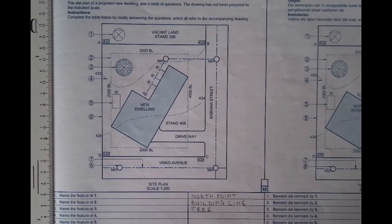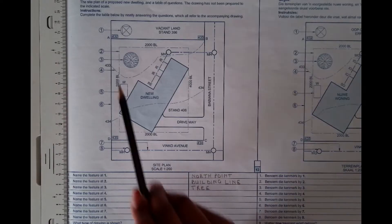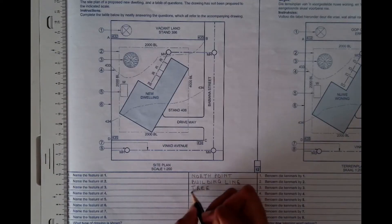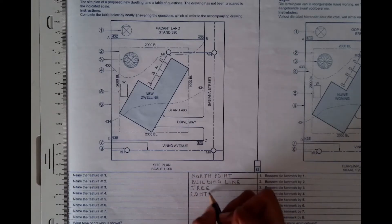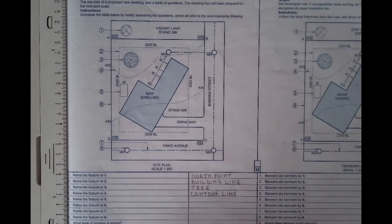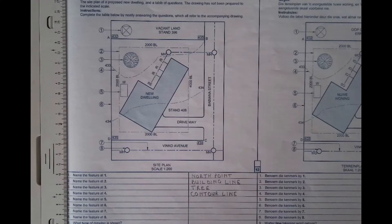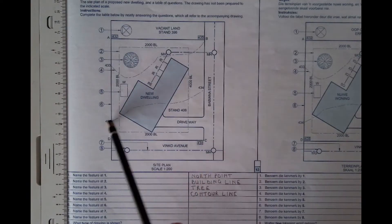And then you are told to name the feature at four. The feature at four is what we call contour lines. And the purpose of a contour line, as you will see in this picture here, it indicates the height, so the ground elevation or the depression. So it shows us how low or high the ground level is. That is the purpose of a contour line. And you will see that you have a contour line here and then the other one here.